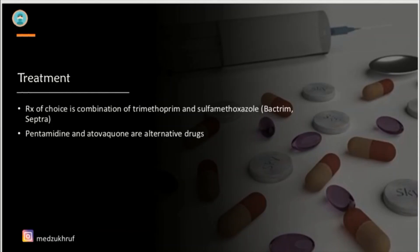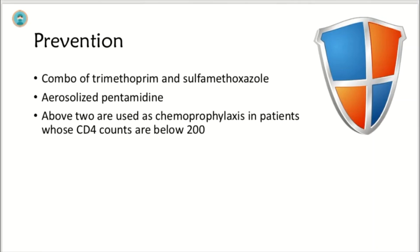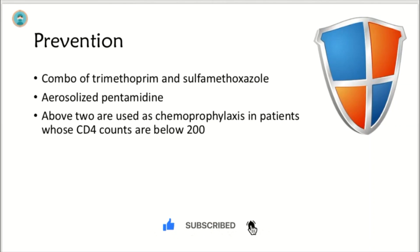Treatment of choice is the combination of trimethoprim and sulfamethoxazole, that is Bactrim or Septra. Pentamidine and atovaquone are alternative drugs. For prevention, the combination of trimethoprim and sulfamethoxazole as well as aerosolized pentamidine are used as chemoprophylaxis in patients whose CD4 counts are below 200.